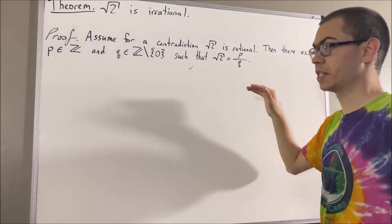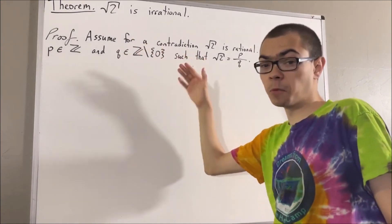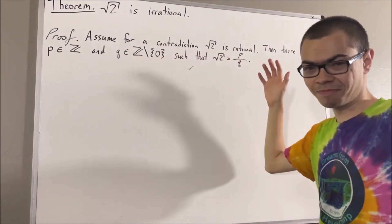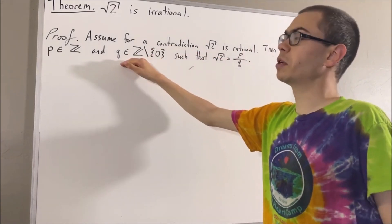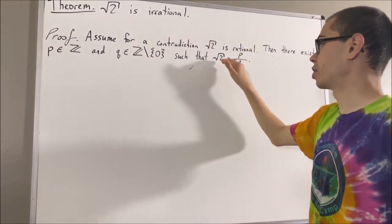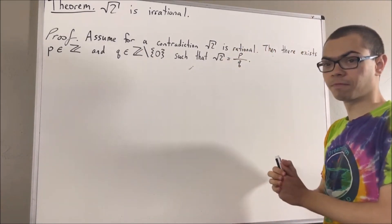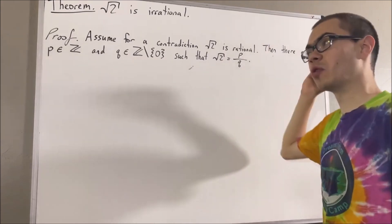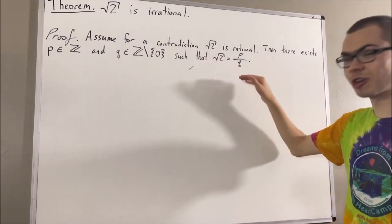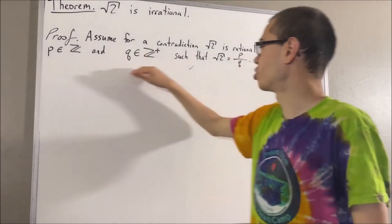The reason why is: since q is non-zero, we have that either q is positive or q is negative. If q is positive, then we're done. And if q is negative, then we know that the negative of q is positive, and we have that the square root of two is equal to the negative of p over the negative of q. So there is at least one integer and one positive integer such that this is true.